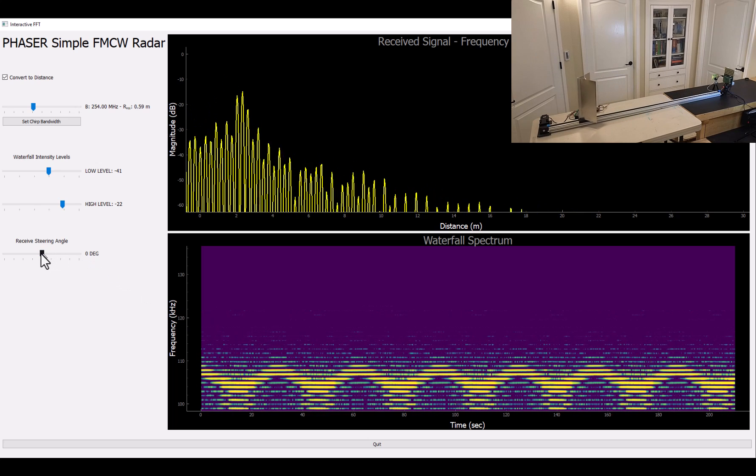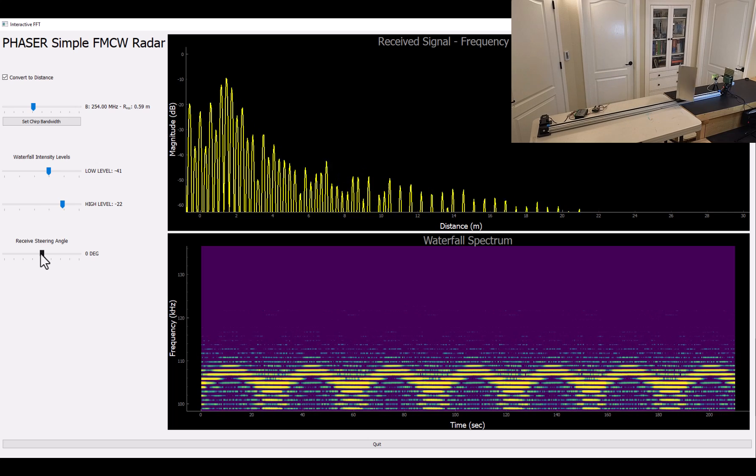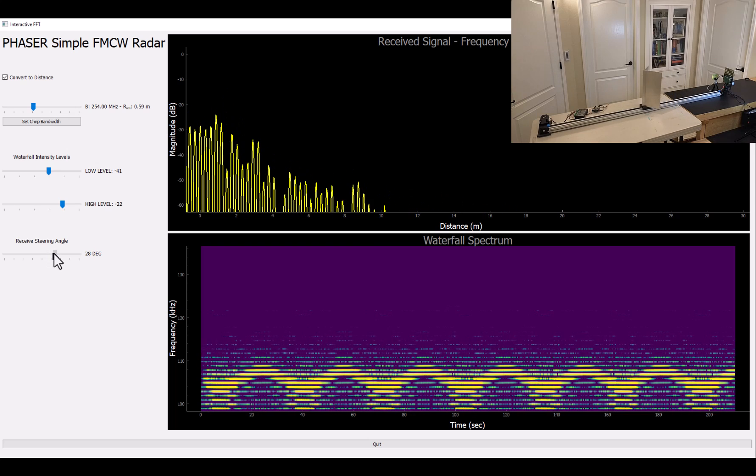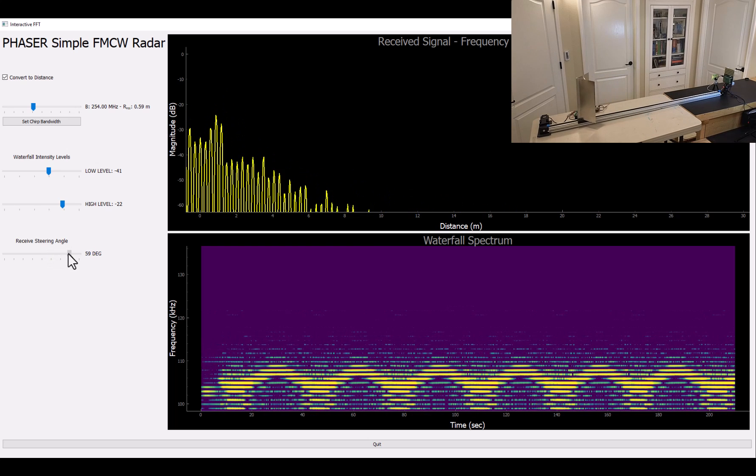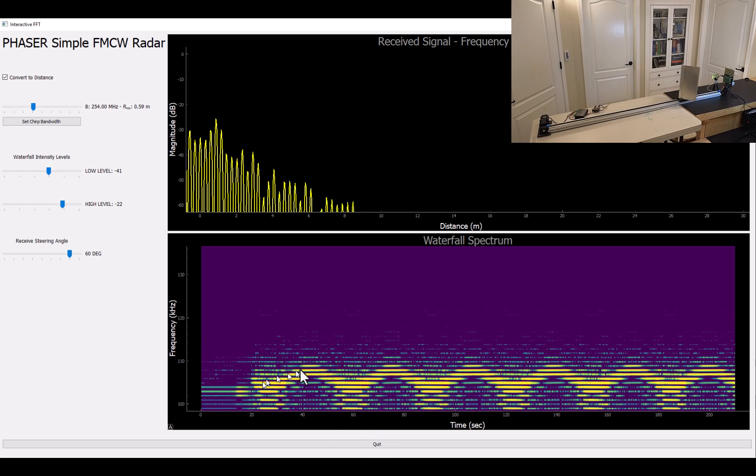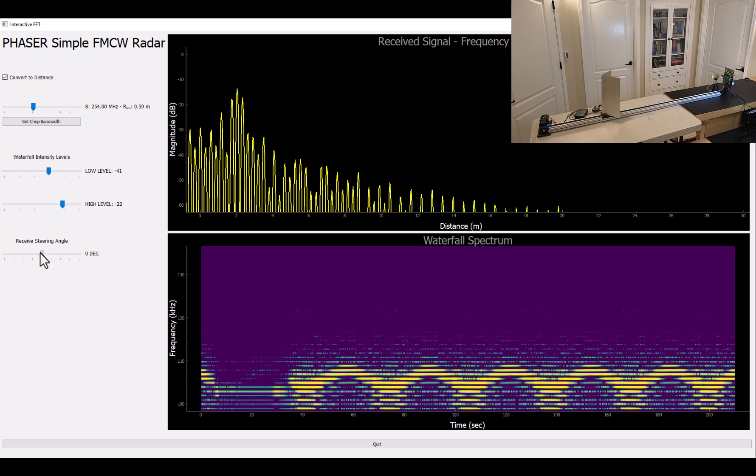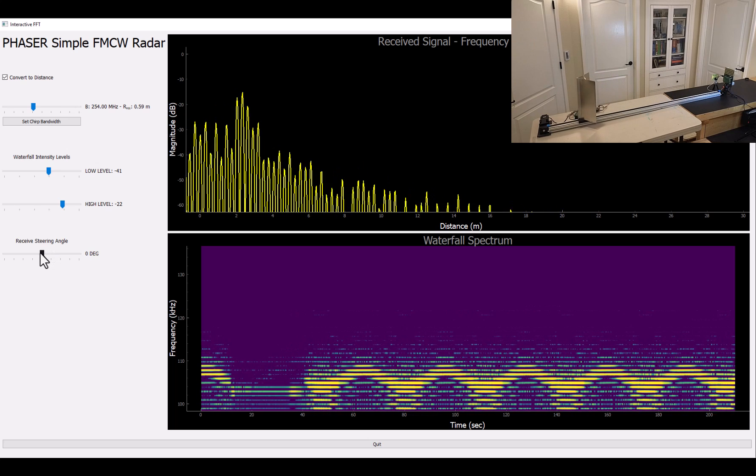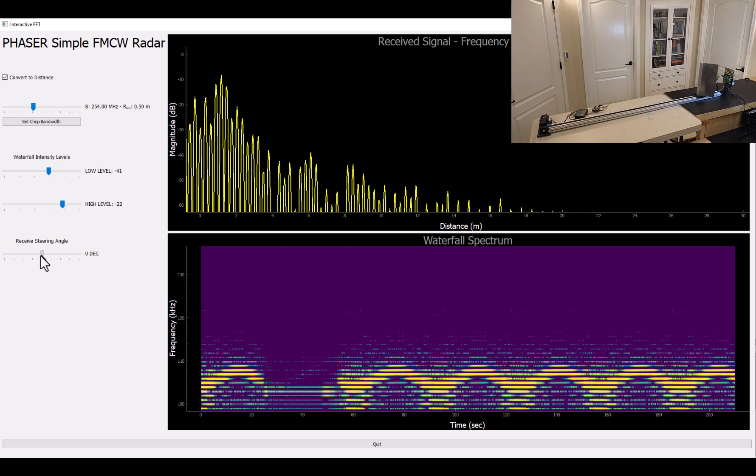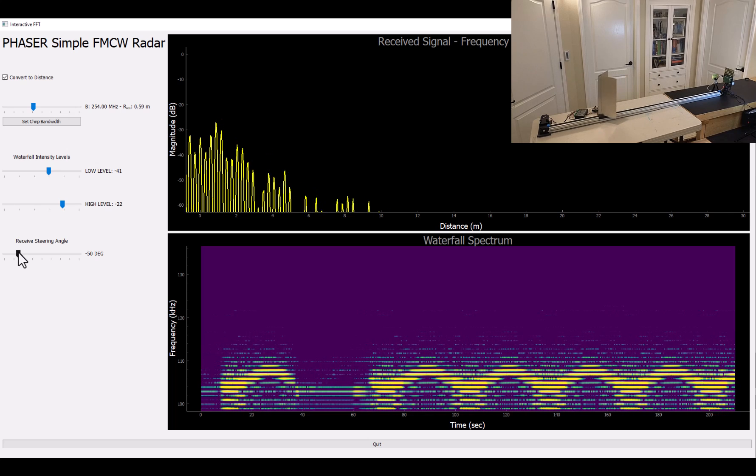And then finally, on this little steering knob here, we haven't talked about the phased array beam forming piece of the phaser board, but you can steer that receive beam. So if we steer it away from the target trolley, then we no longer see it moving anymore. If we bring it back to mechanical boresight, which is zero degrees, then you see it again. And if you bring it, steer it the other way, you also don't see anything.